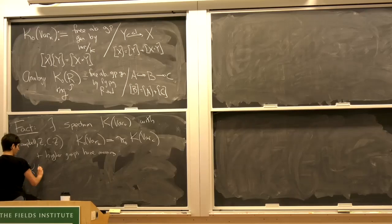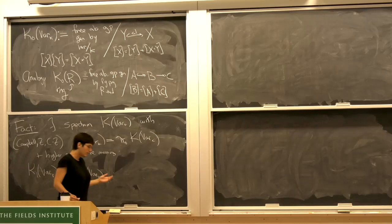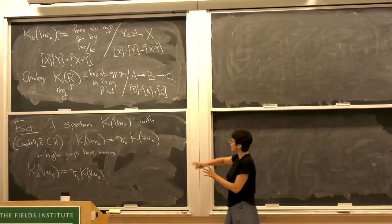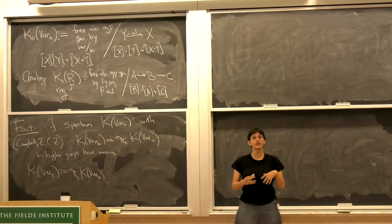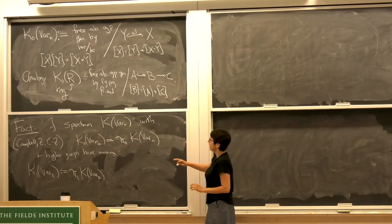K1 of varieties is defined to be π1 of this spectrum. But how do we think about K1 of varieties? I'm going to go to the analogy with a ring and tell you about K1 of a field, and try to understand what K1 of varieties means in that light.